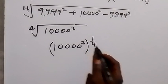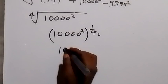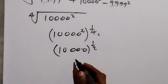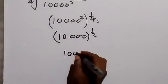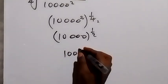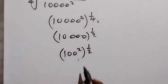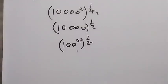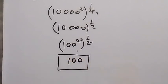From the law of exponents, 10,000 squared raised to the power 1 over 4 simplifies to 10,000 raised to the power 1 over 2, which is the square root of 10,000. This reduces simply to 100. So here we have the simplified form of the expression given, without using a calculator.